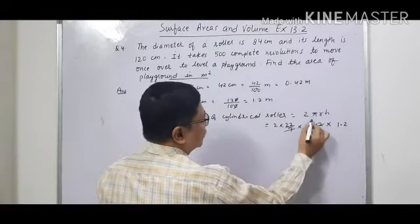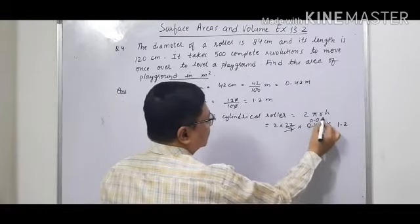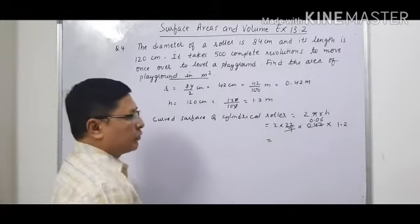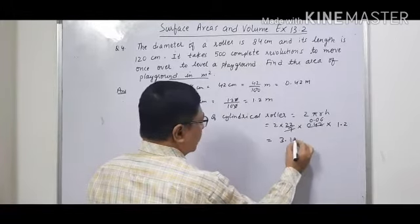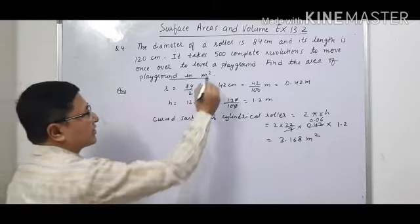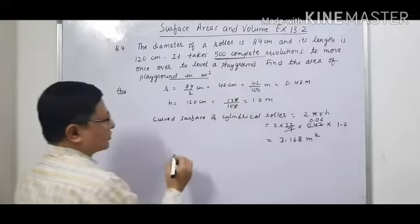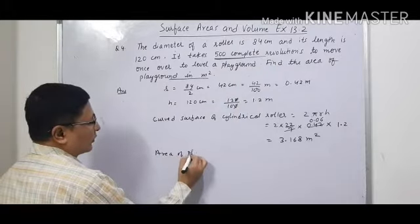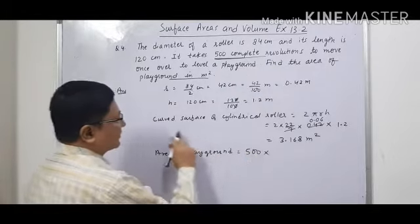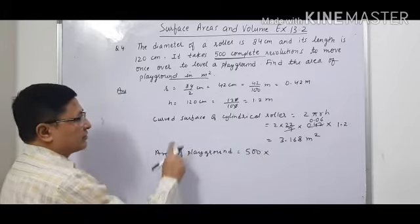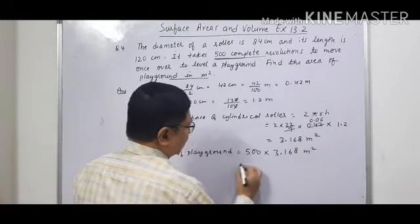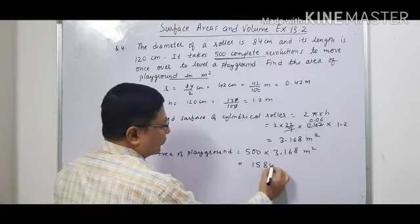So when we cancel this, 2 into 22 into 0.06 into 1.2, we will get the answer 3.168 meter square. Now we have to find the area of the playground. How many times is it taking revolutions? 500 complete revolutions. So area of playground will be equal to 500 into curved surface area of the cylindrical roller, that is 3.168 meter square. So when we multiply this, we will get the answer 1584 meter square.